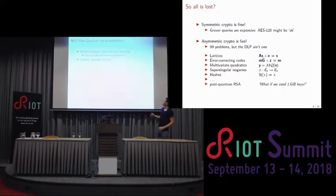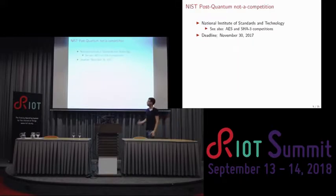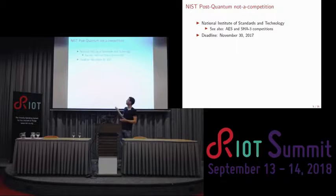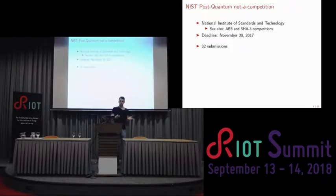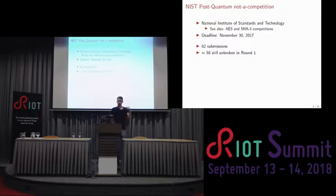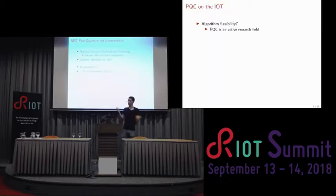To streamline this process, NIST — the American standardization authority that also standardized AES and SHA-3 — called for submissions for new post-quantum crypto standards. The deadline for submissions was last year. 82 submissions were sent in; 58 are still standing, because as with any new crypto, some things break. These 58 have been around for a while and people are investigating whether they are fast and whether they are secure.